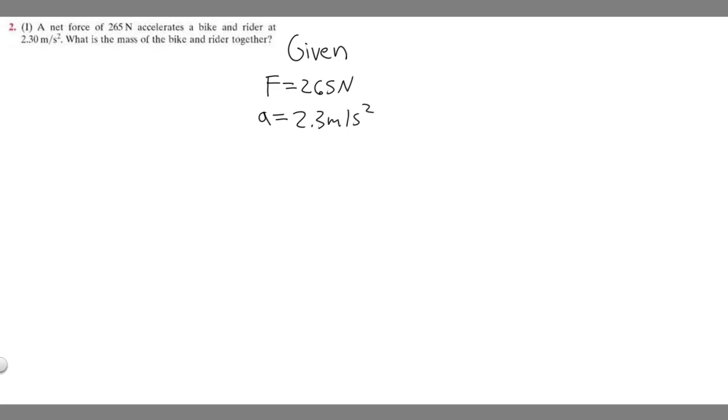And they tell us to find the mass of the bike and rider together. So we represent mass by M. So I'm going to write M equals question mark because that's what we're trying to find.